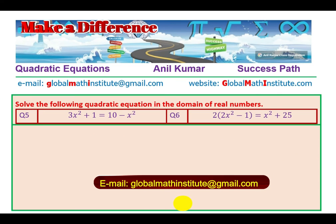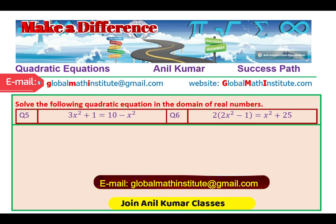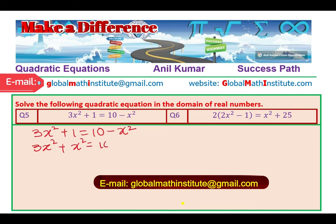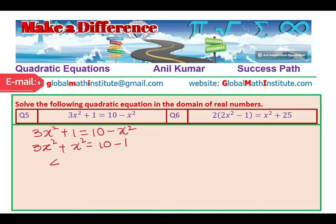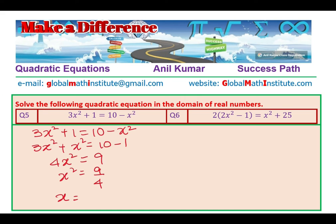Now questions 5 and 6 are slightly more complicated as we have variables on both sides. Writing variables on one side and numbers on the other, we combine like terms to get 4x squared on the left and 9 on the other side. So x squared equals 9 over 4. Before taking the square root, write plus or minus, giving x equals plus or minus 3 over 2.